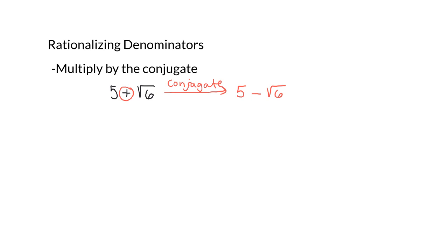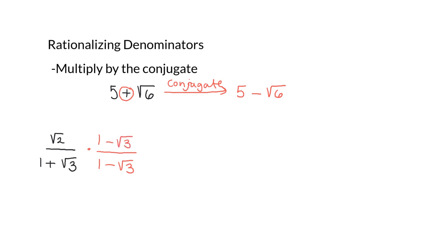An example of rationalizing denominators: simplify root 2 over 1 plus root 3. First we want to find the conjugate of the denominator. The conjugate is 1 minus root 3. We'll multiply by that conjugate in both the numerator and the denominator — so we multiply by 1 minus root 3 over 1 minus root 3, because that's multiplying by a form of 1, so it doesn't change the value of the expression.